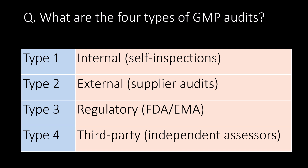What are the four types of GMP audits? Type 1: internal audits, including self-inspections. Type 2: external audits. Type 3: regulatory inspections such as FDA and EMA. Type 4: third-party audits.